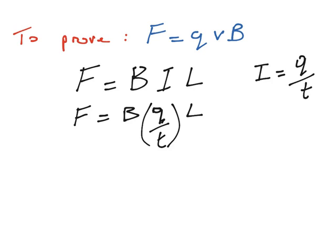What we can then do is instead of having the charge, the Q divided by the time, we can move the T over so that it's underneath the length of the wire. So we have the force is equal to the magnetic flux density multiplied by the charge, but now we have the length that the charge has travelled inside of the wire, which is L, divided by time.